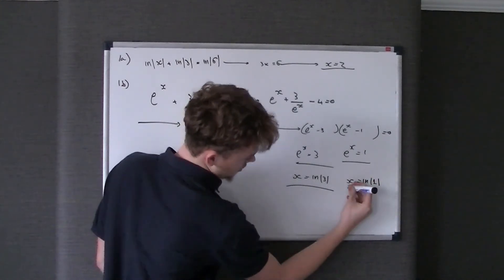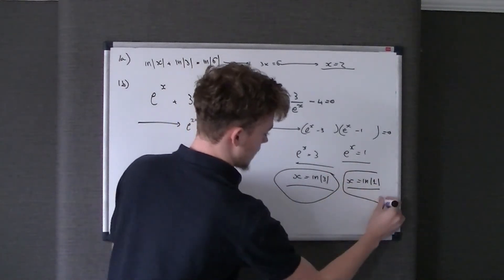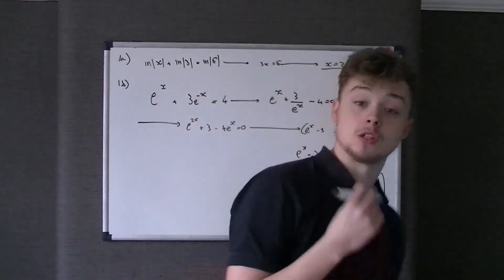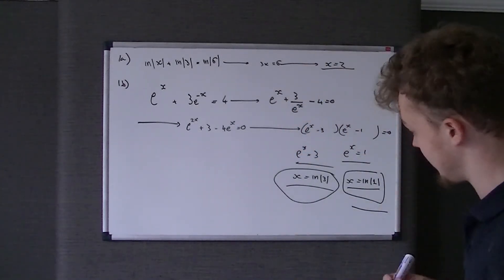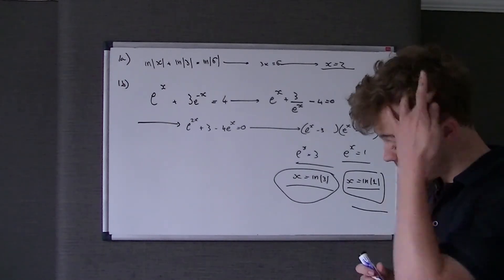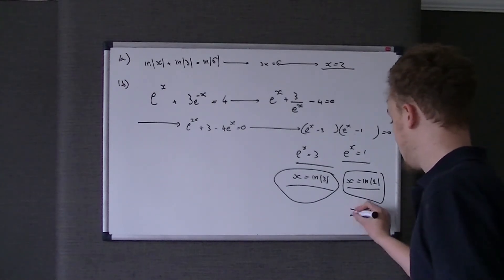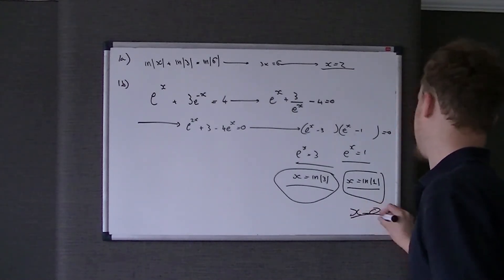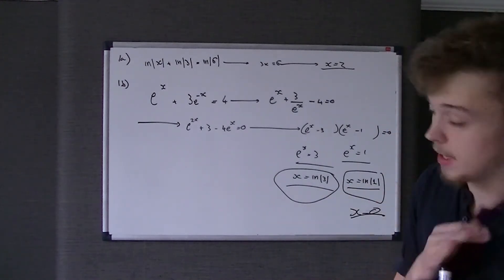Now, I think in the mark scheme, it does allow you just to give them solutions. But you should know if you type in your calculator, obviously we want an exact solution, so there's nothing wrong with leaving it as ln of 1. That's perfectly acceptable. But to show the examiner that you're a little bit more intelligent, what you should do is, if you type ln of 1 into your calculator, you get x to be 0. So it's x to be 0 and x to be ln of 3, or ln of 1 and x to be ln of 3.